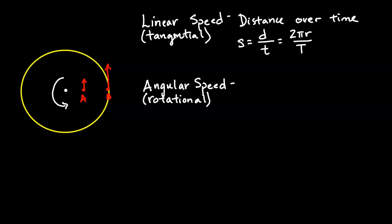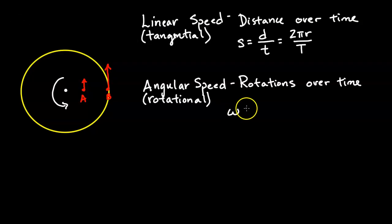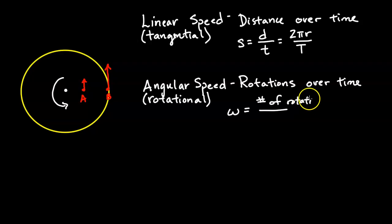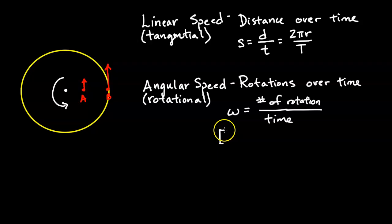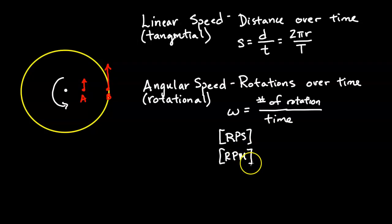Angular speed is different — it's rotations over time. The symbol for angular speed is the Greek letter omega (ω). To calculate omega, you take the number of rotations divided by the time to make those rotations. If timing in seconds, the units are rps (revolutions per second). If measuring in minutes, the units are rpm (revolutions per minute).